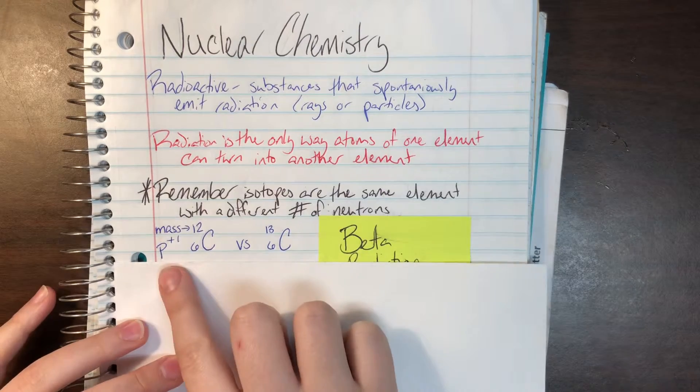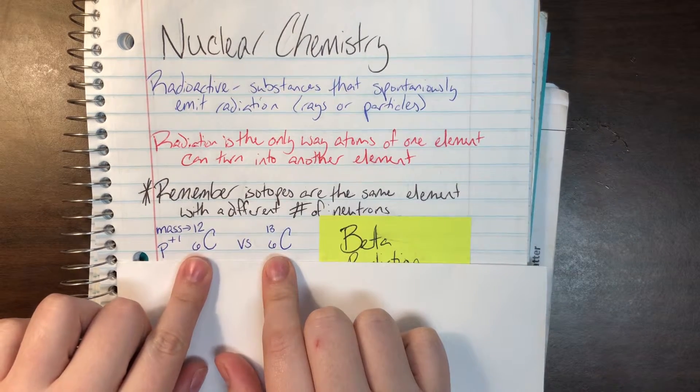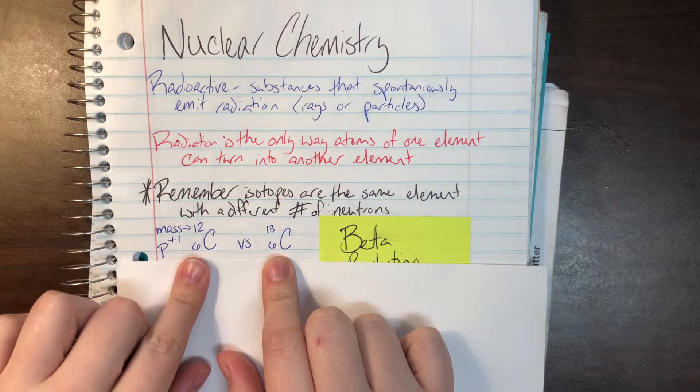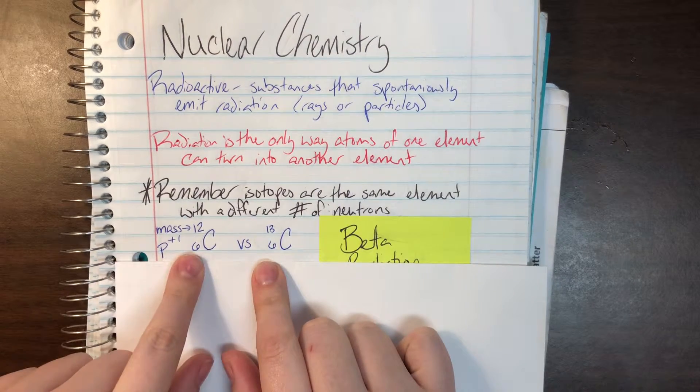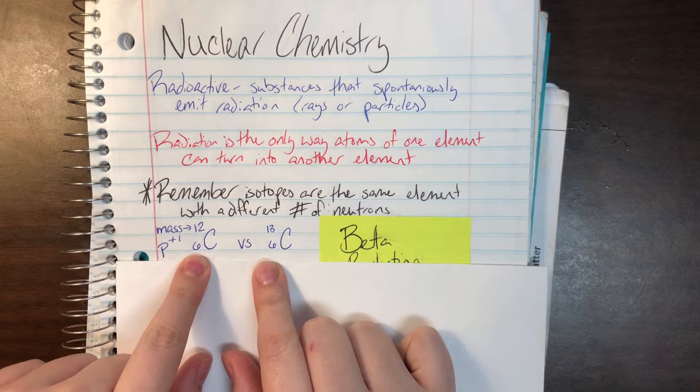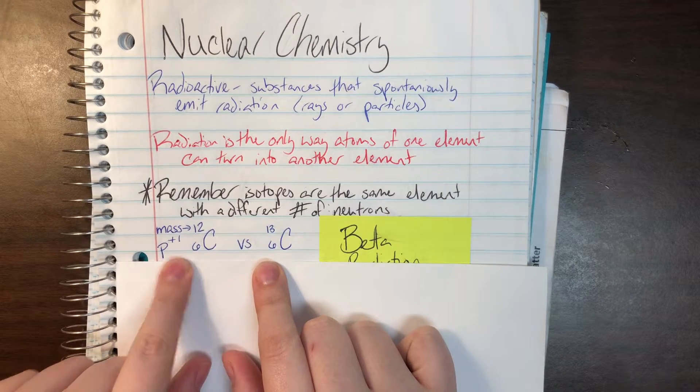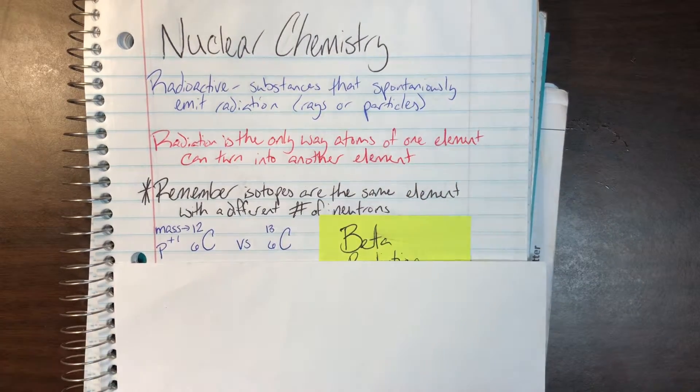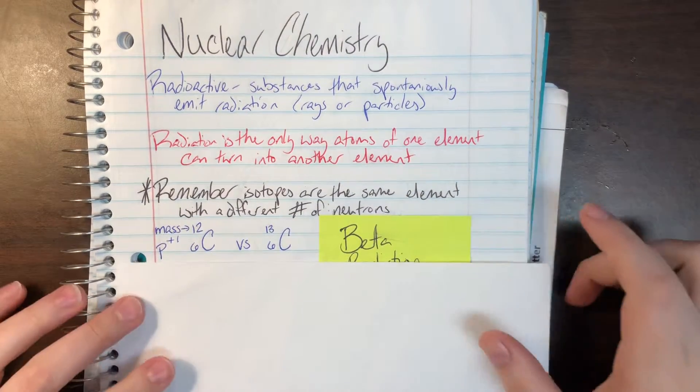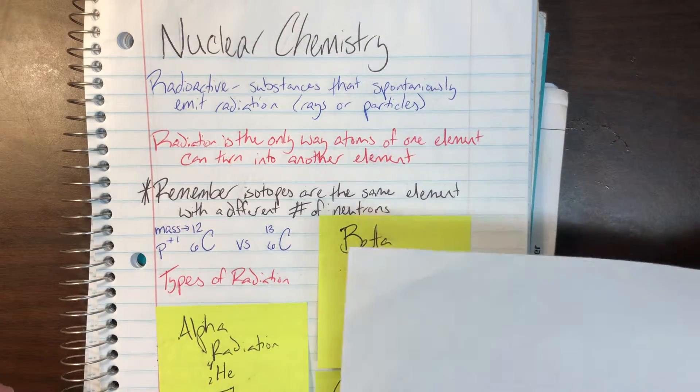So here are just two examples of some isotopes of carbon. We have carbon, which is C, and then this bottom part here, that's going to be the number of protons. Remember, protons are positive. And then this top part here is going to be my total mass, which remember is neutrons plus protons.